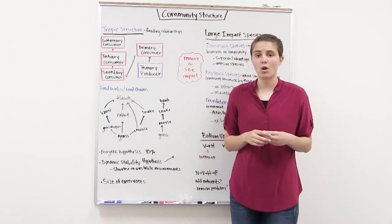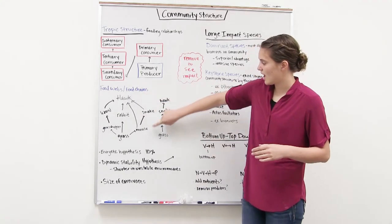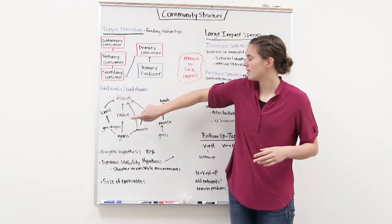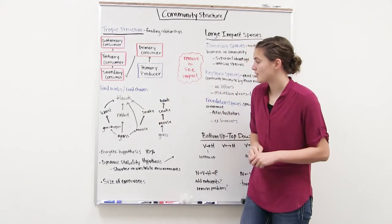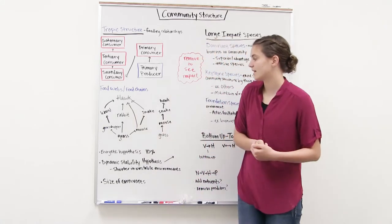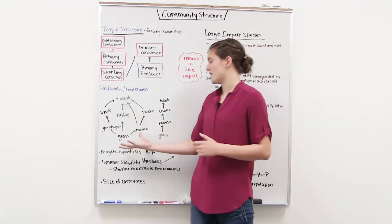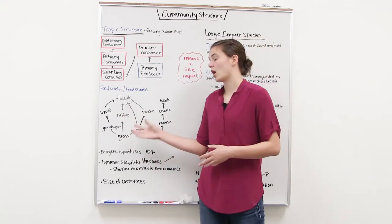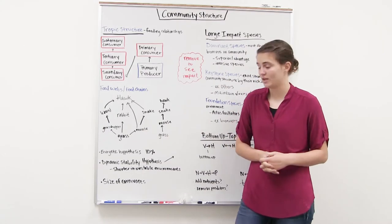It's interesting to note that everything's not set in stone. In one food chain, the hawk is a tertiary consumer, but if we look at a different food chain, the hawk is actually a secondary consumer. It really just depends on which path we're tracing through the food web. Food webs are actually a lot more complex than this because there are so many interactions going on within a community.